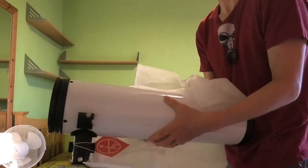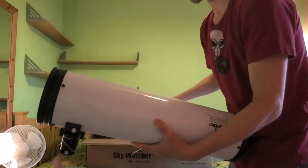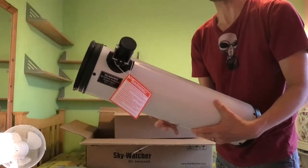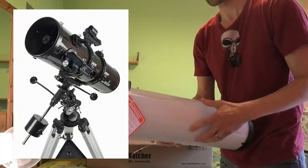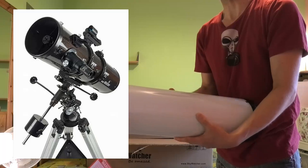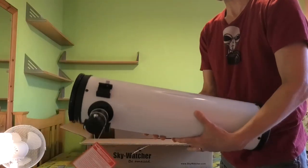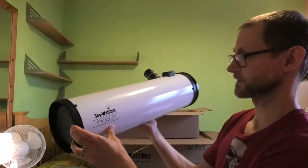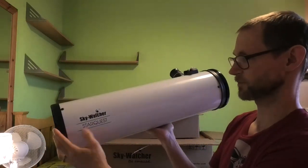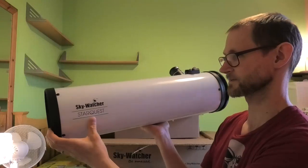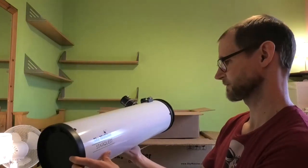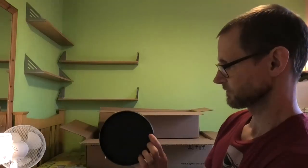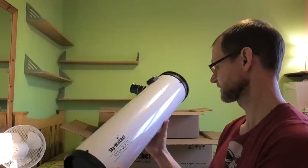Now this is a bit of a new livery for Sky-Watcher, because they usually do what's called the black diamond range, that is black with silver flags. What they've done now is they've gone with this lovely white with slight green accents, which really looks, I mean you can't beat a white telescope really, it just looks really scientific and proper.